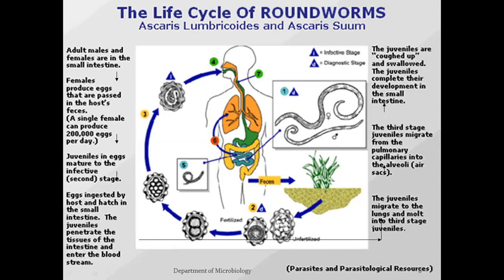In summary of the life cycle: adult male and female reside in the small intestine. A single female can produce about 200,000 eggs per day. Larvae in eggs mature into infective L2. Eggs containing infective L2 are ingested by the host, hatch in the small intestine, and the L3 larvae penetrate intestinal tissues and enter the bloodstream. They migrate to the lungs, molt into L3 juvenile stage, migrate from pulmonary capillaries into alveoli, are coughed up, swallowed, and complete development in the small intestine.